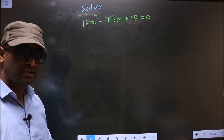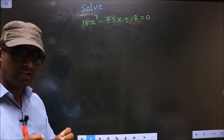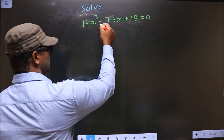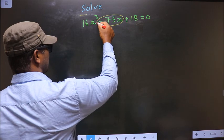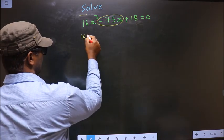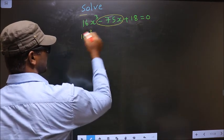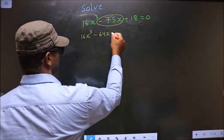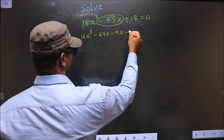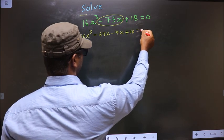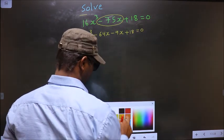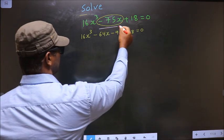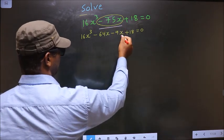To solve this, we need to change the x term, that is minus 75x. So in place of minus 75x, I write minus 64x minus 9x, plus 18 equal to 0. In place of minus 75x I have written this.